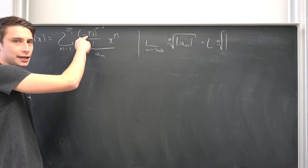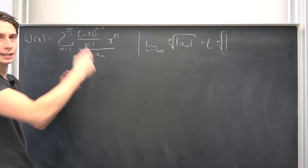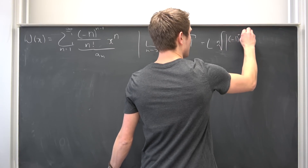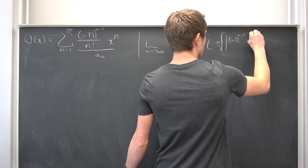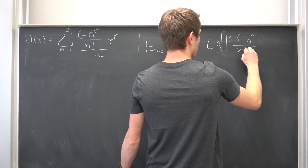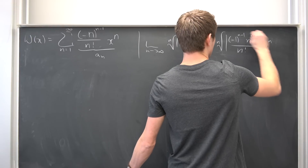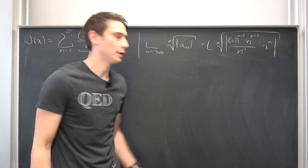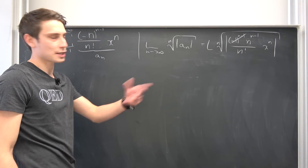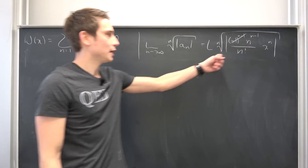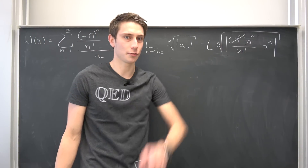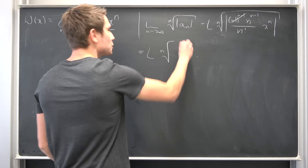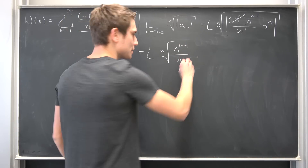Negative n to the n minus 1 power is nothing but negative 1 to the n minus 1 power times n to the n minus 1 power. So this is negative 1 to the n minus 1 power times n to the n minus 1 power over n factorial times x to the nth power. Those are element of the natural numbers, meaning they are strictly positive, so we get the limit of the nth root of n to the n minus 1 power over n factorial.